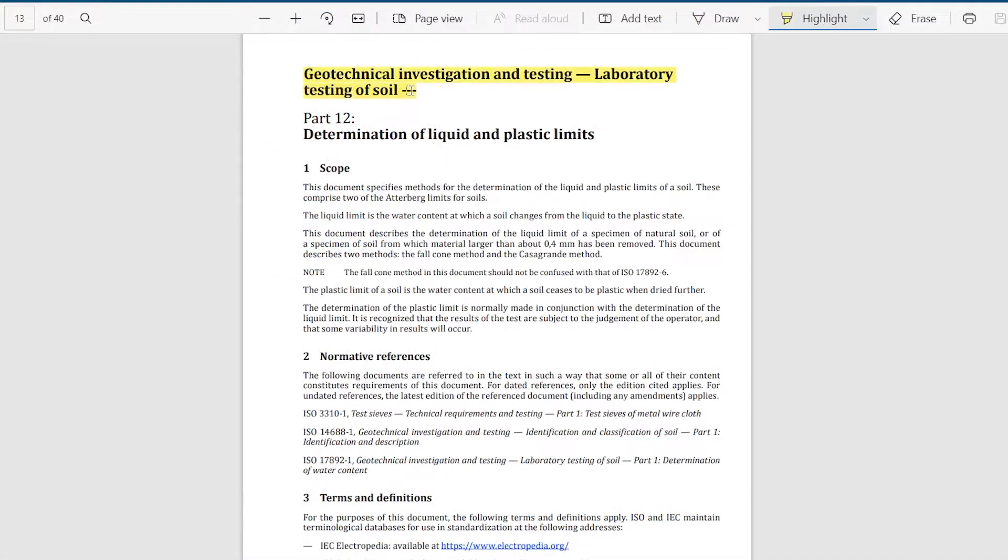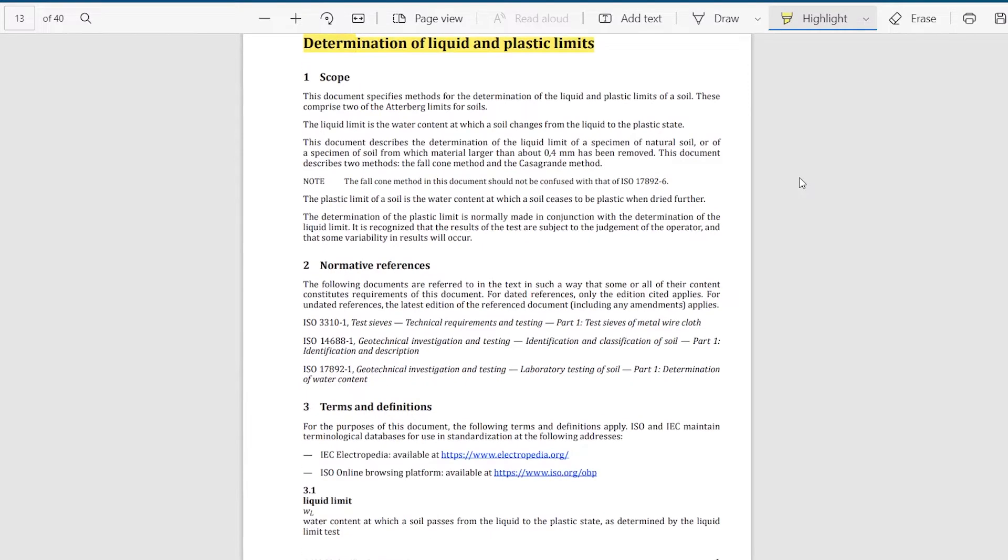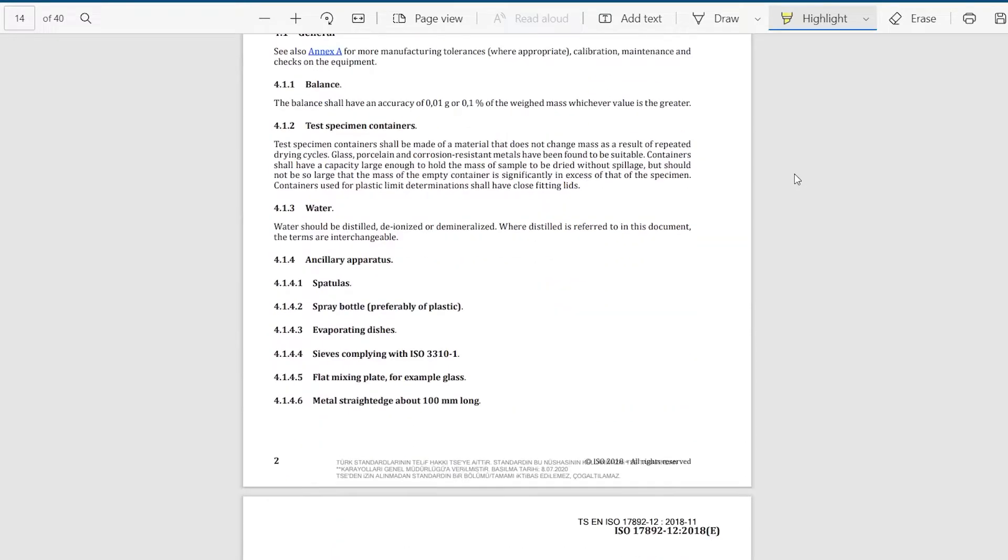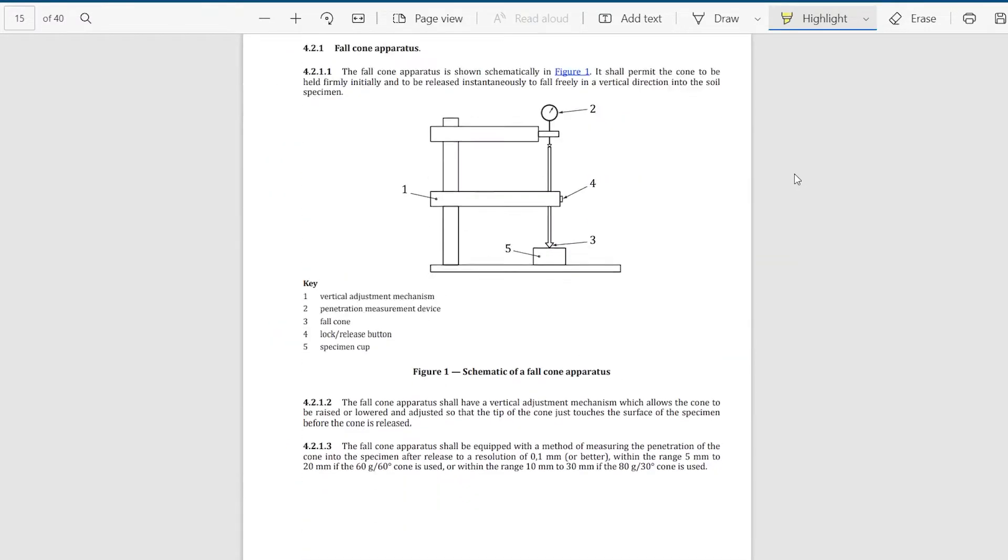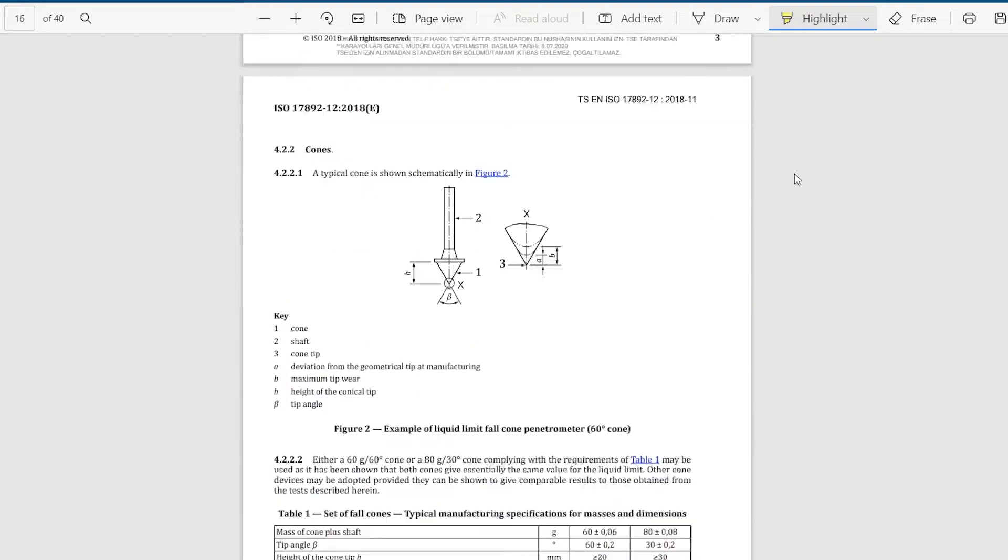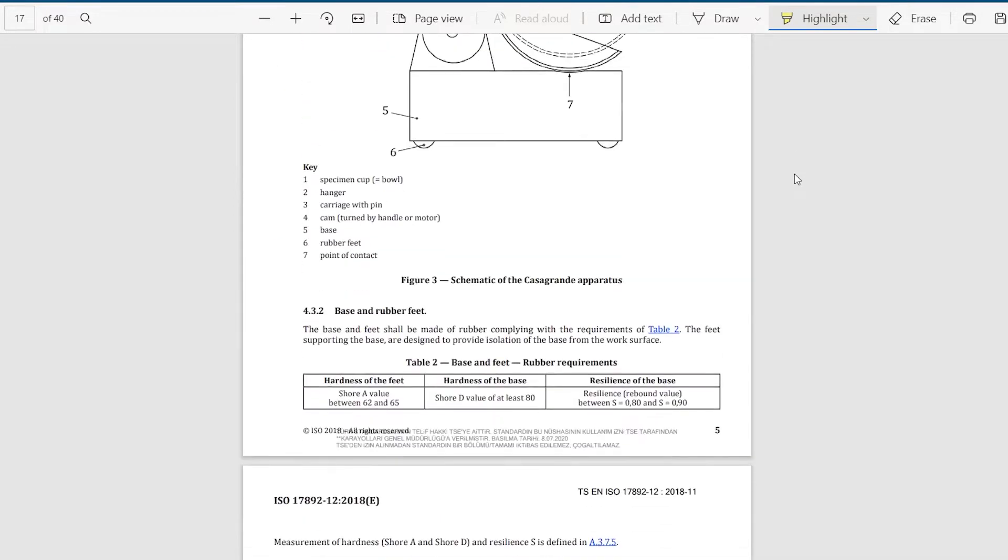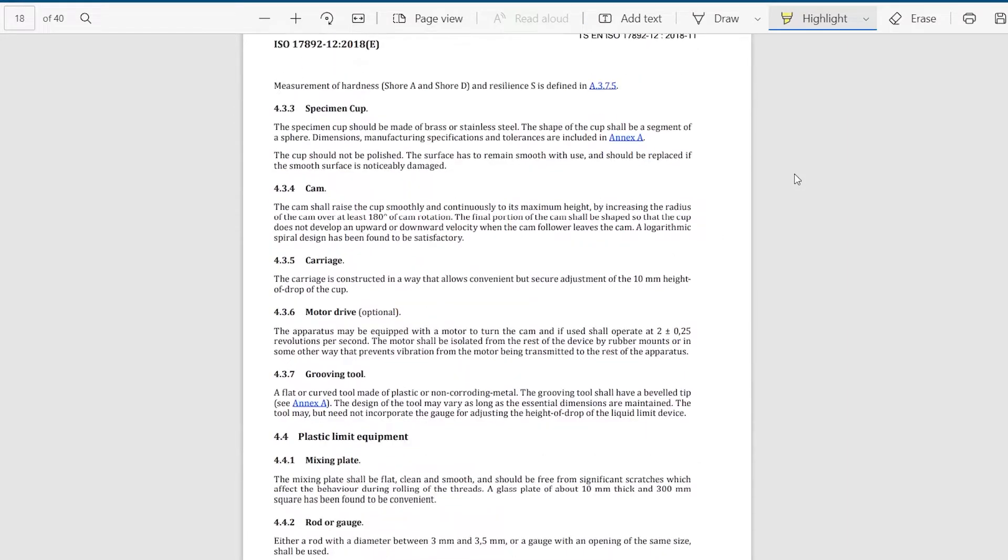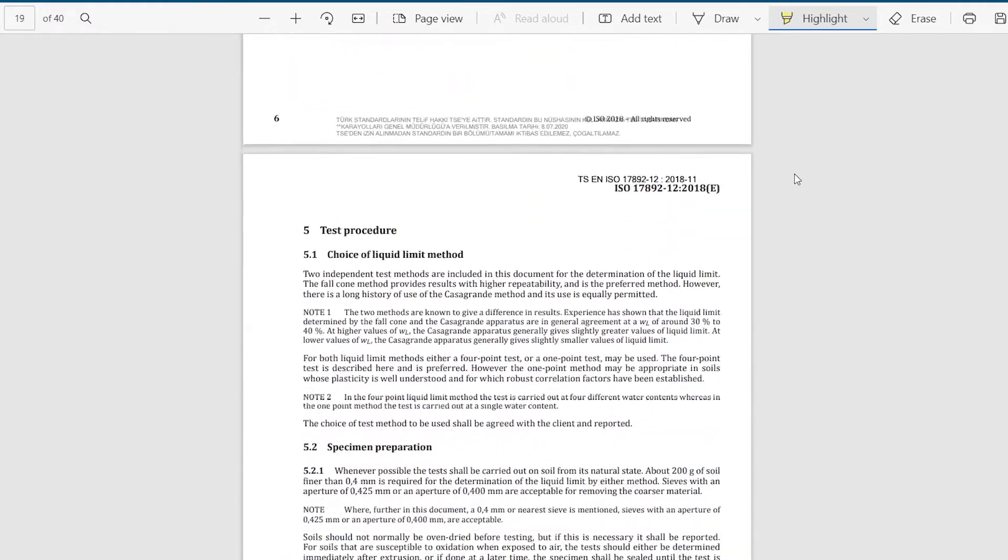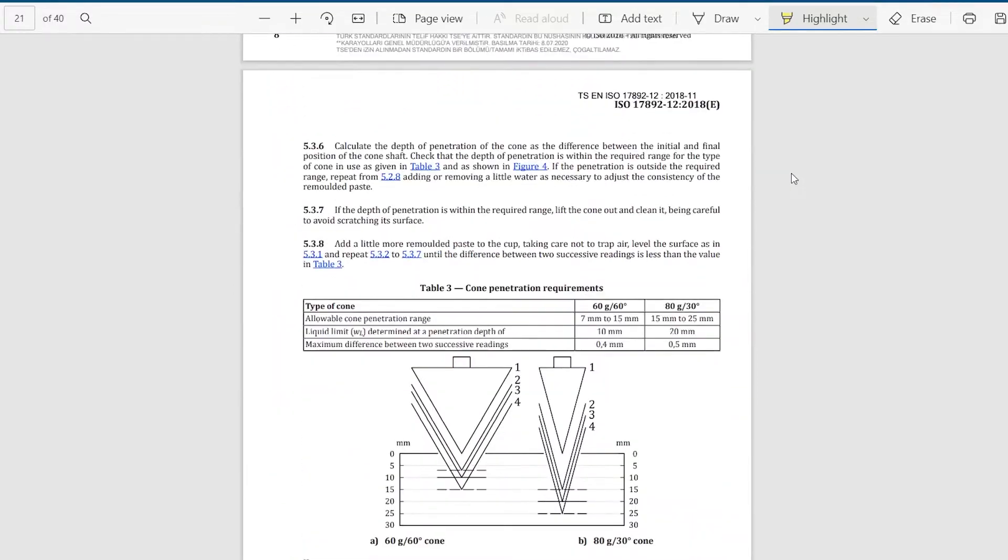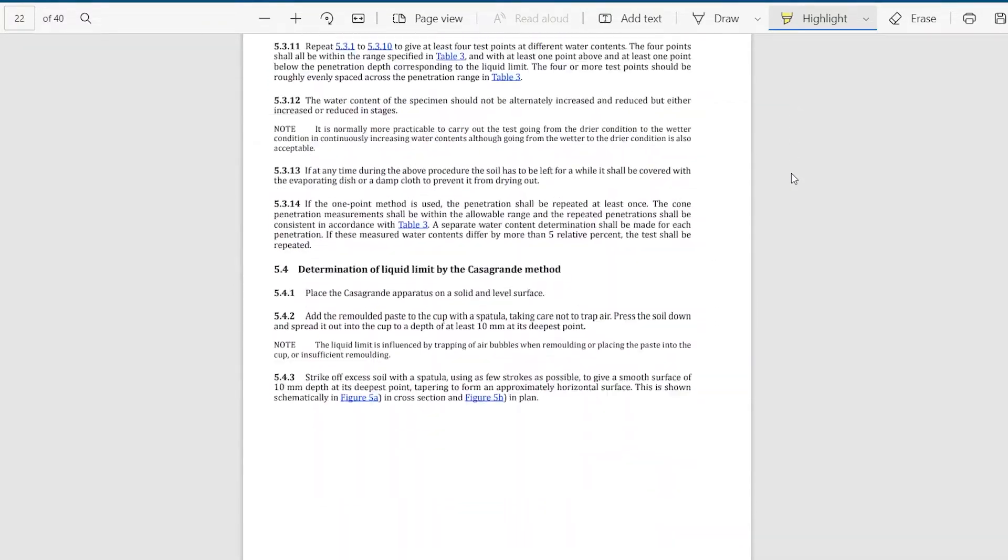The fall cone method provides results with higher repeatability compared to the Casagrande method. The test procedure is described in ISO 17892-12-2018, Geotechnical Investigation and Testing, Laboratory Testing of Soil Part 12, Determination of Liquid and Plastic Limits.